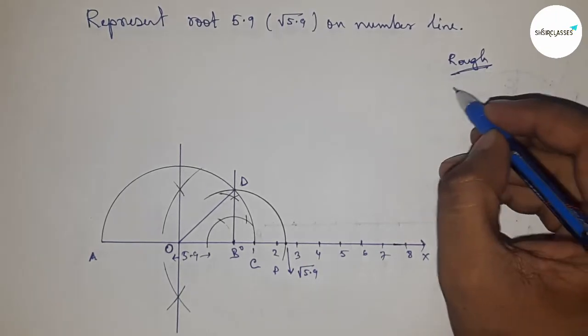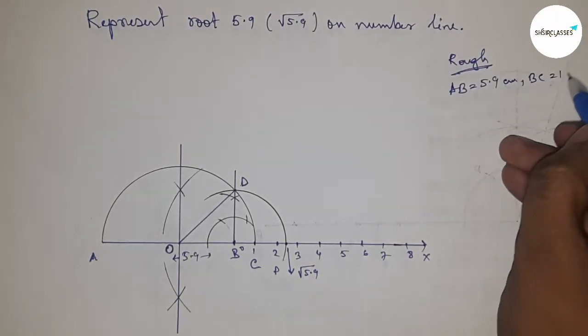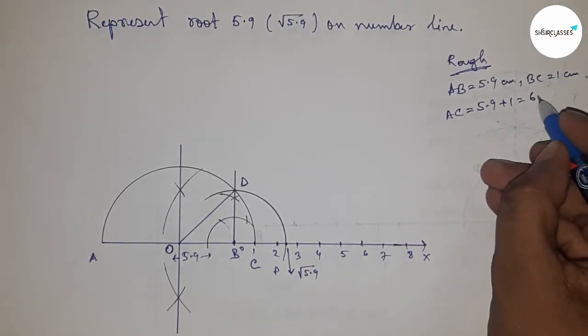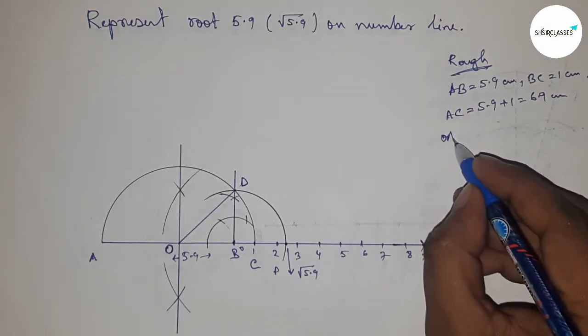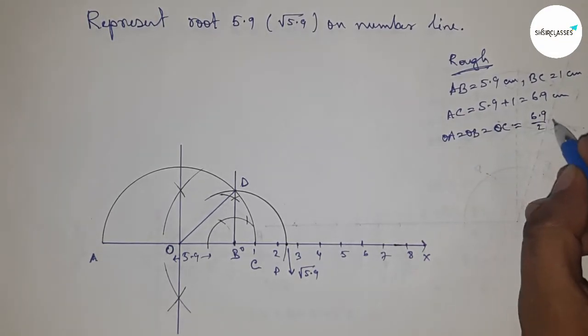Now let's discuss the calculation. AB equals 5.9 centimeters, BC equals 1 centimeter, so AC equals 5.9 plus 1 equals 6.9 centimeters. The radius OA equals OD equals OC equals 6.9 by 2 centimeters.